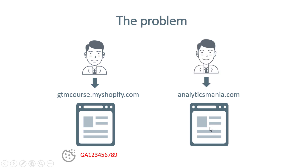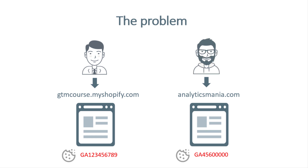This second website is part of the same user journey, and Google Analytics is also activated on it. But since this is a different domain, the cookie value is also different. This is happening because Google Analytics on this domain cannot access the cookie that was stored on the other domain. So even though the visitor is the same, Google Analytics treats them as a new different user, and your reports will show two users instead of one.